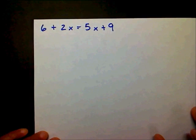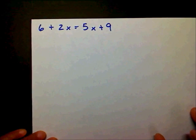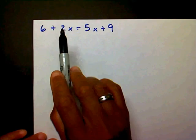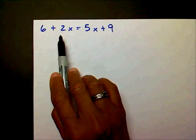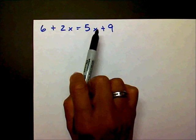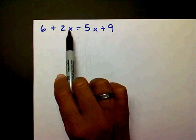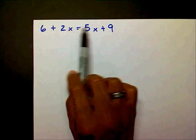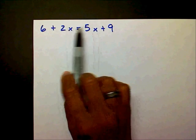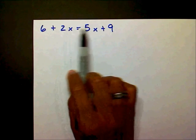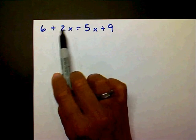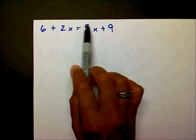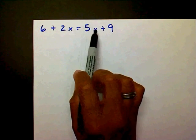The first equation we're going to tackle today is different from previous equations because you have variables on both sides — you have terms with variables on both sides. You have a plus 2x on one side and a plus 5x on the other.